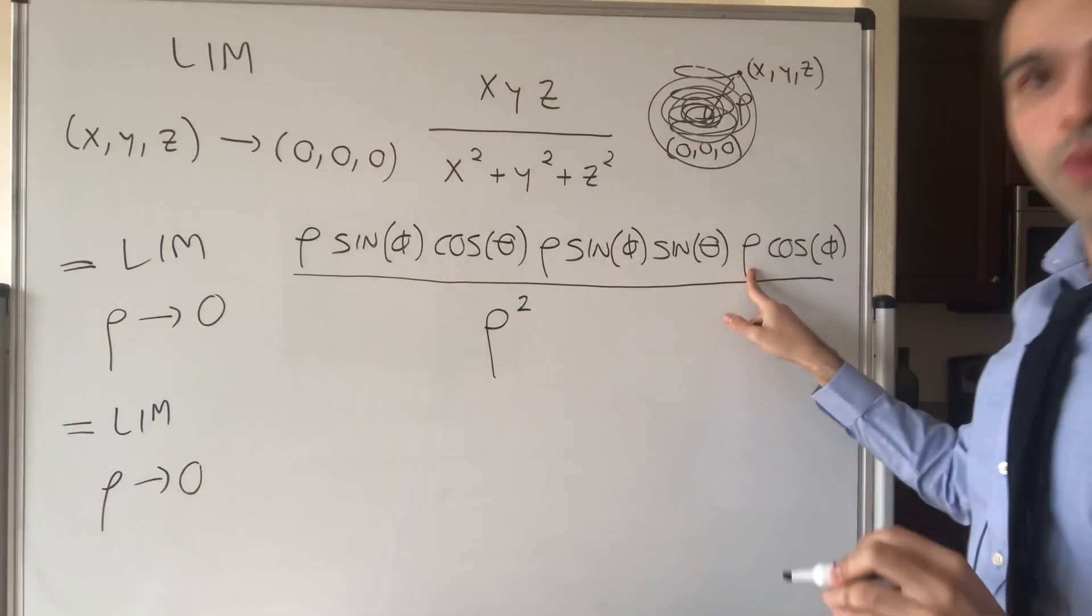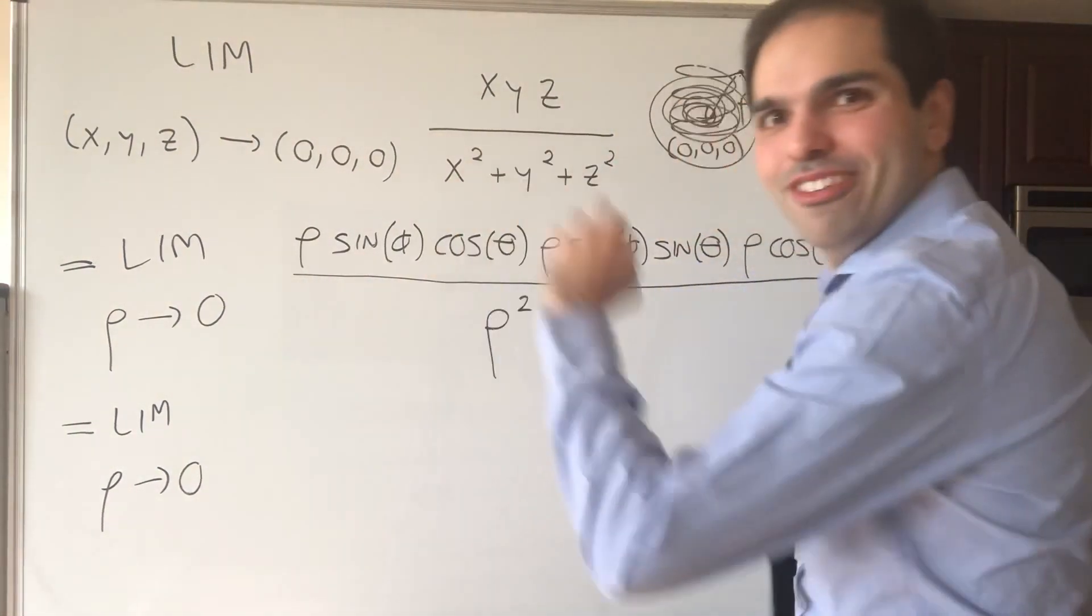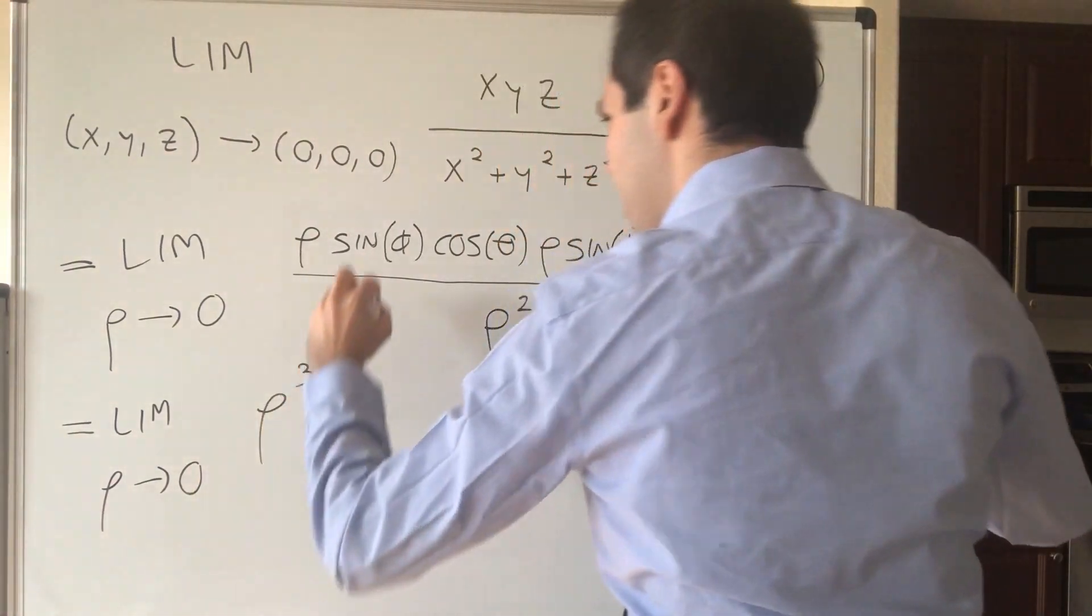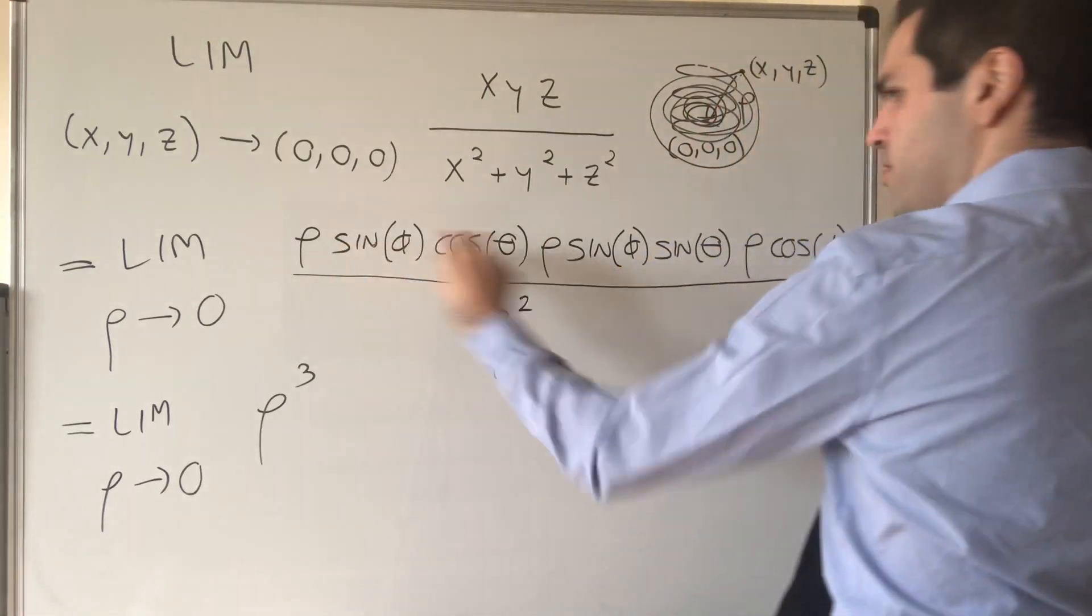Well, rho, rho, rho the boat. I'm on fire today. That's rho cubed. And then this becomes, let's say, two sines.